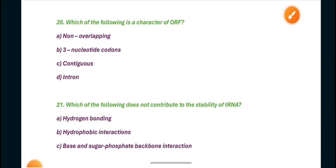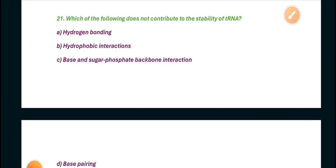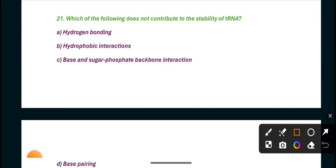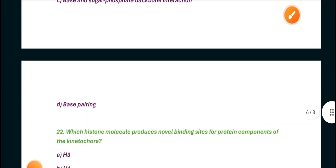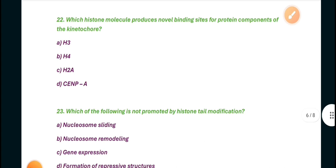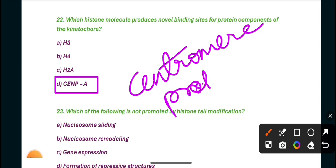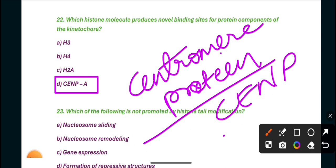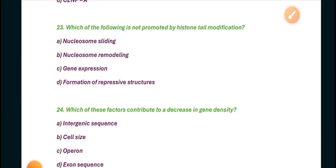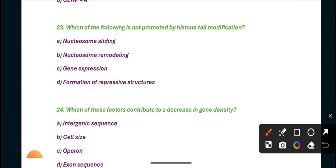Question 21: Which of the following does not contribute to the stability of tRNA? The answer is B, hydrophobic interactions. Question 22: Which histone molecules produce novel binding sites for protein components of the histone code? The answer is CENP-A. The full form of CENP-A is centromere protein A, also called CNP. Next, which of the following is not promoted by histone tail modification? D is the right answer, nucleosome sliding. Nucleosome sliding is a type of nucleosome remodeling.